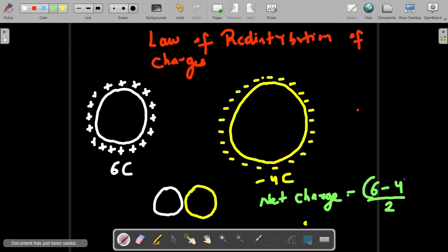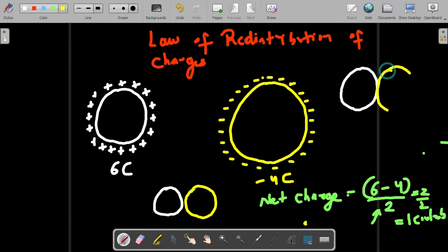the net charge—the numerator—divided by two means it is equally divided between the two spheres. So this becomes two divided by two equals one coulomb, which means now both spheres have one coulomb charge. Let me draw a diagram. Since both have one coulomb charge, they will repel each other, and you can show the charge here.